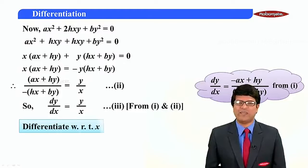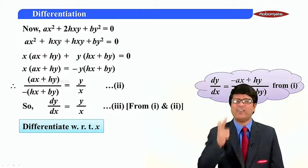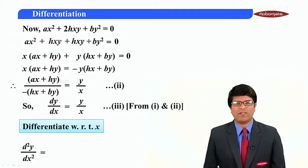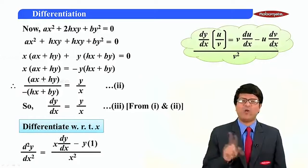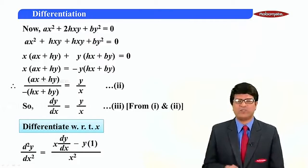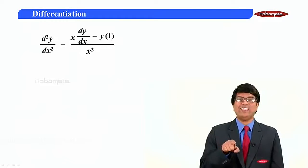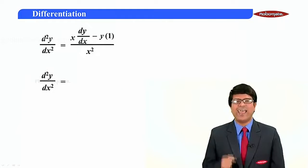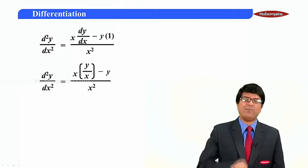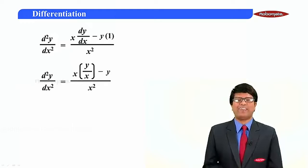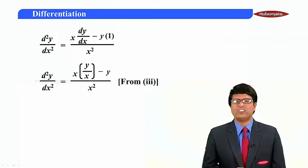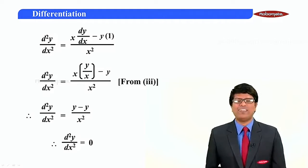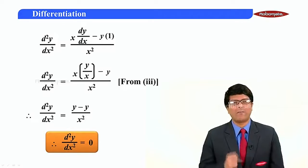Let us differentiate dy/dx = y/x with respect to x. Since two variables are separated by division, using the quotient rule: d²y/dx² equals [x·(dy/dx) minus y·1] upon x². Substituting dy/dx = y/x: d²y/dx² equals [x·(y/x) minus y] upon x², which equals (y minus y) upon x², so d²y/dx² equals 0. Hence proved.